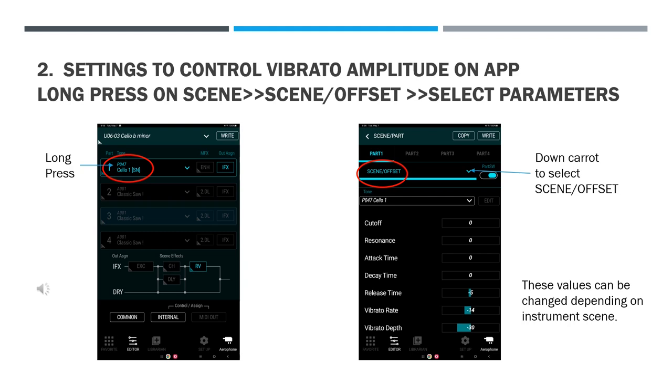In the new menu, select parameters relevant to vibrato. This step allows you to customize vibrato control for your particular scene.